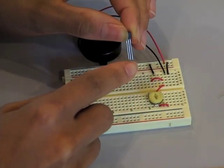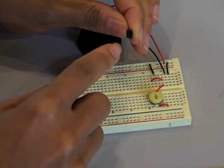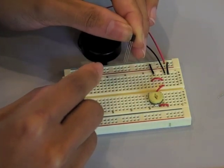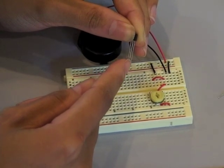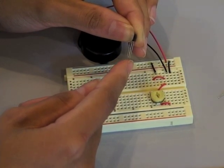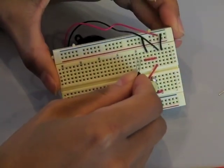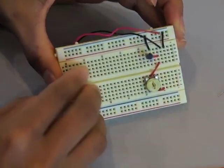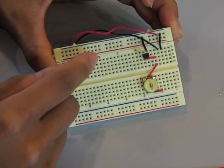You want to hold it with the legs pointed downward and the flat side of the face facing toward you. In this orientation the left leg will go into 7B, the middle leg into 8B and the right leg into 9B. Afterwards you may wish to trim the leads a bit so that the SCR sits closer to the breadboard.